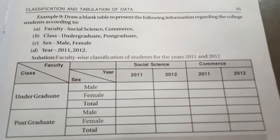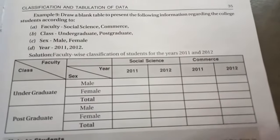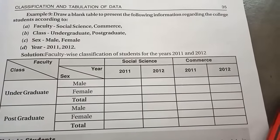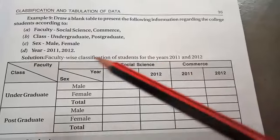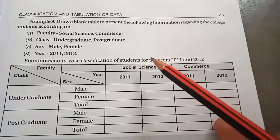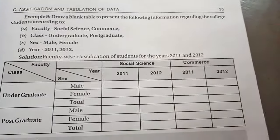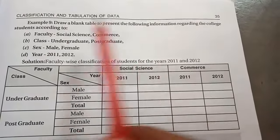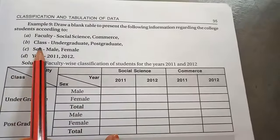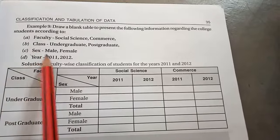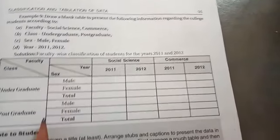So you should be in a position of constructing a table. You can shift undergraduate, postgraduate this side, social science and commerce this side. So however you wish you can do it. We will see: draw a blank table to present the following information regarding the college students according to faculty — social science and commerce; class — undergraduate, postgraduate; sex — male, female; year 2011-2012.